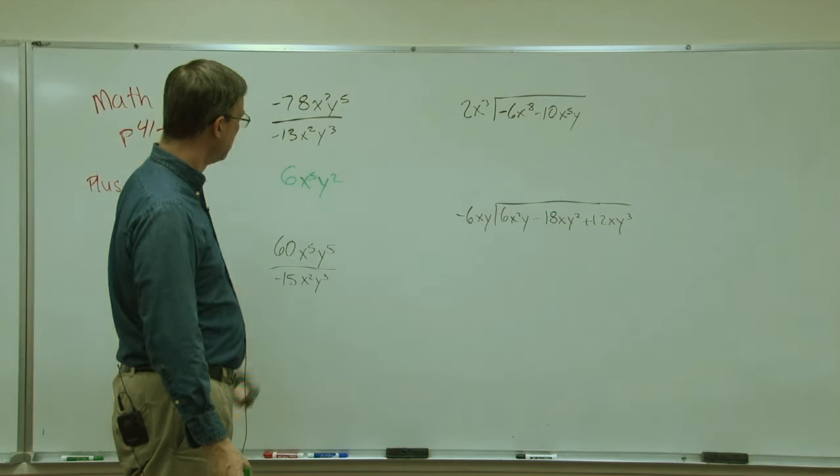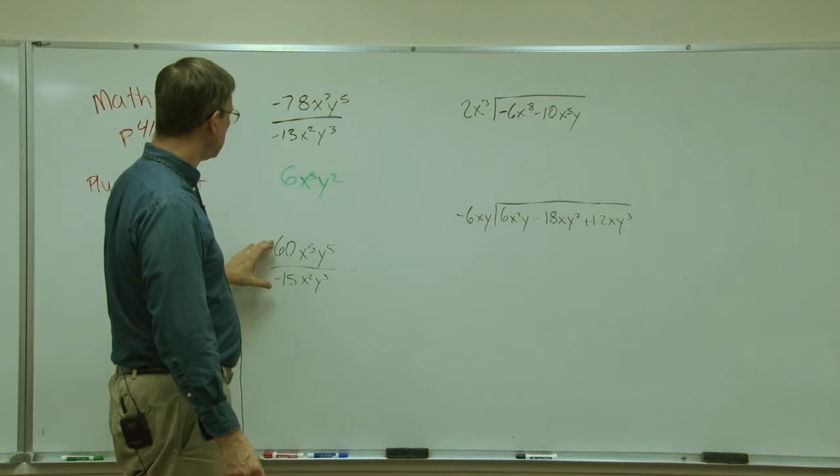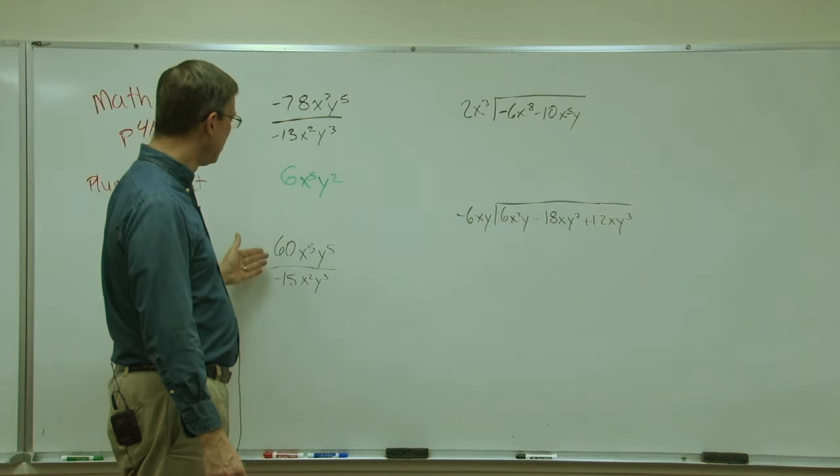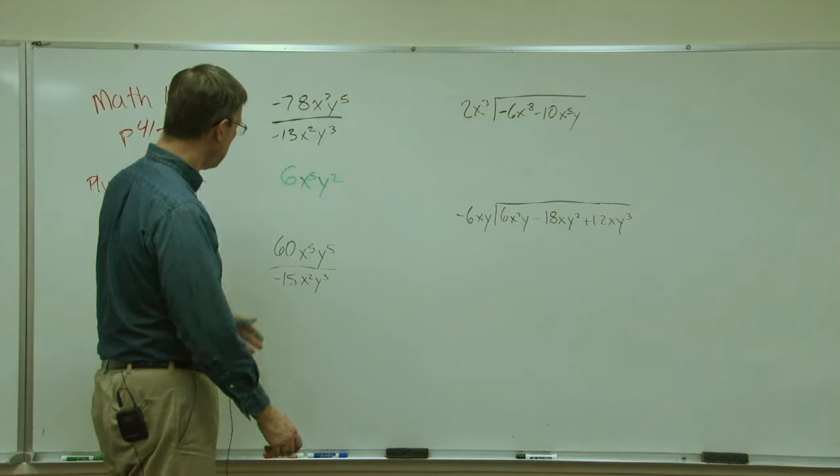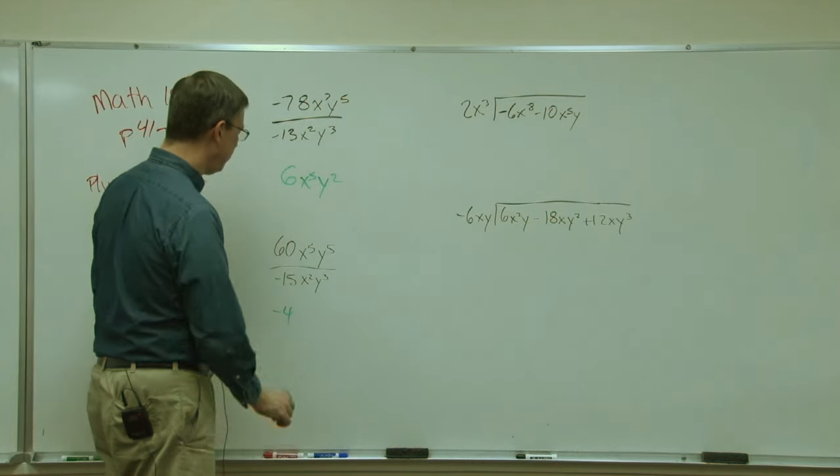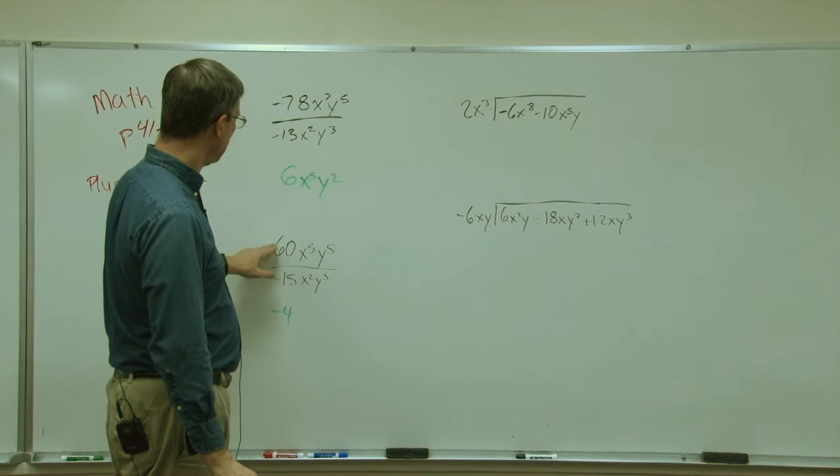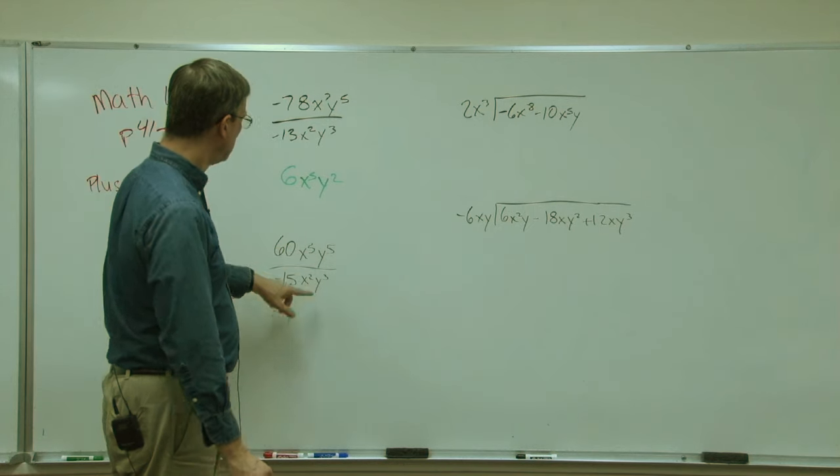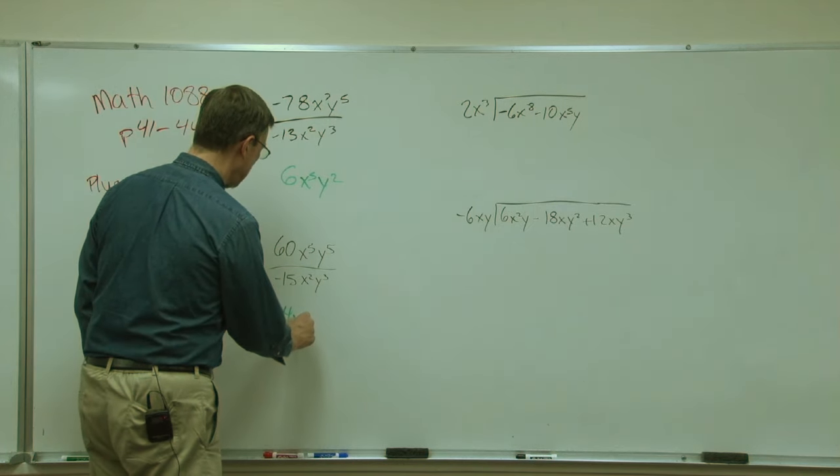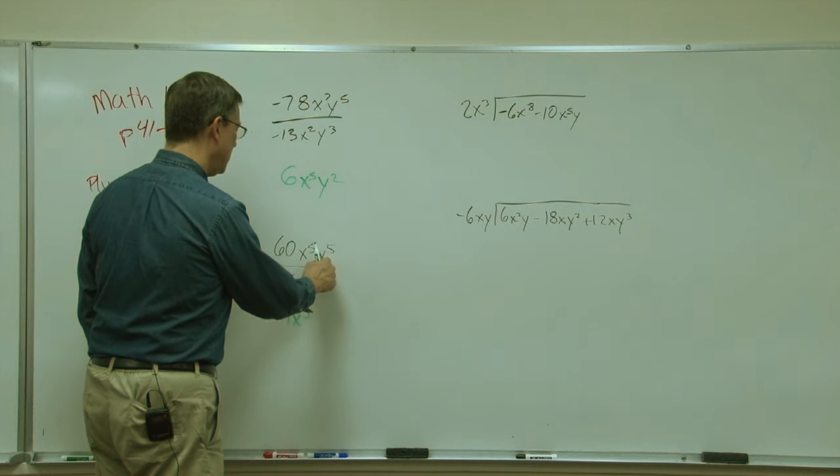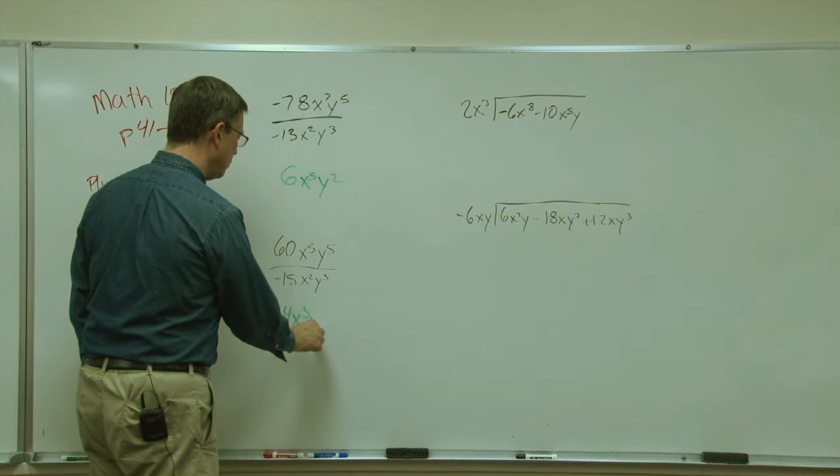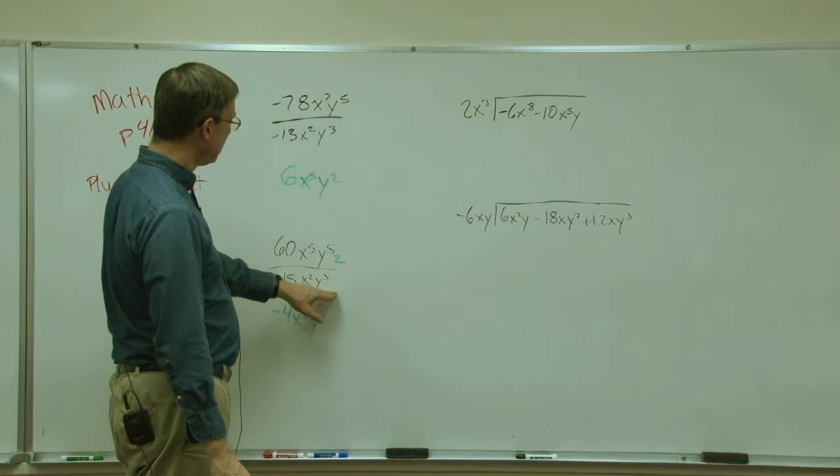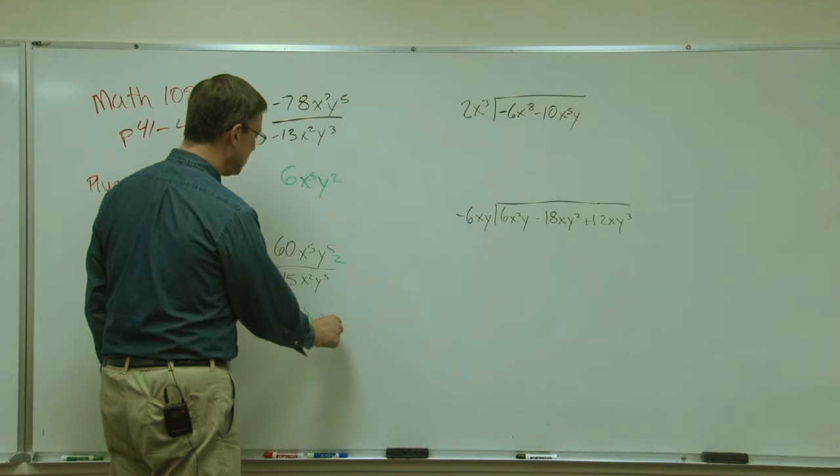Let's do another one. 60 divided by negative 15. Here we have signs are different and we're dividing, so we have to get a negative number. The answer will be negative 4 because 15 times 4 is 60. Now we're going to subtract the exponents, so 5 minus 2 would be x to the third, and then 5 minus 3 is 2, so y squared. If I had a z term up here and I'm not dividing by anything down here, then I would just tack the z on as part of the answer.